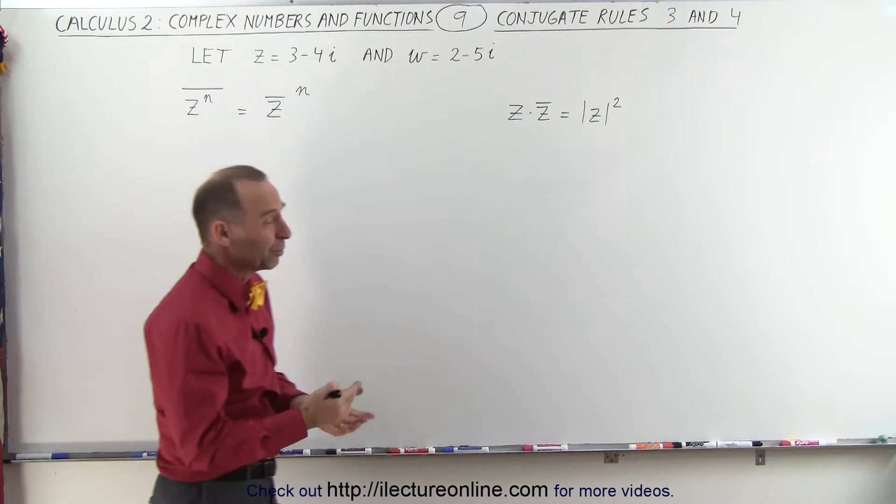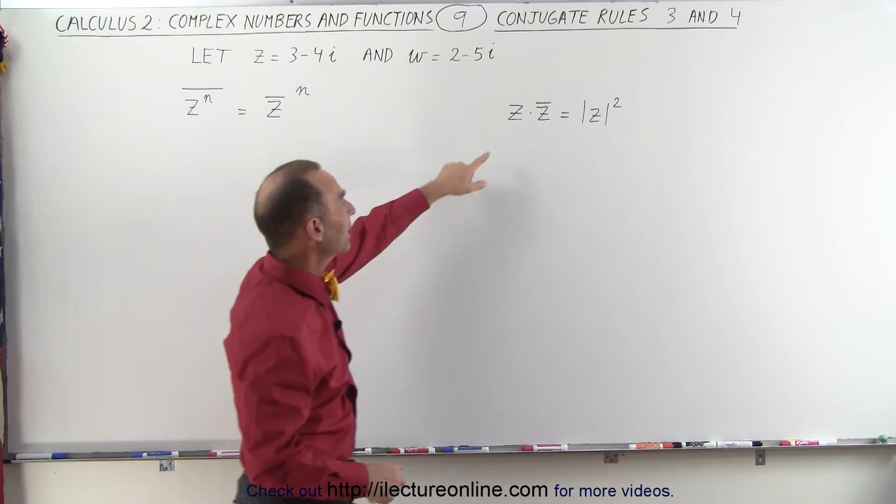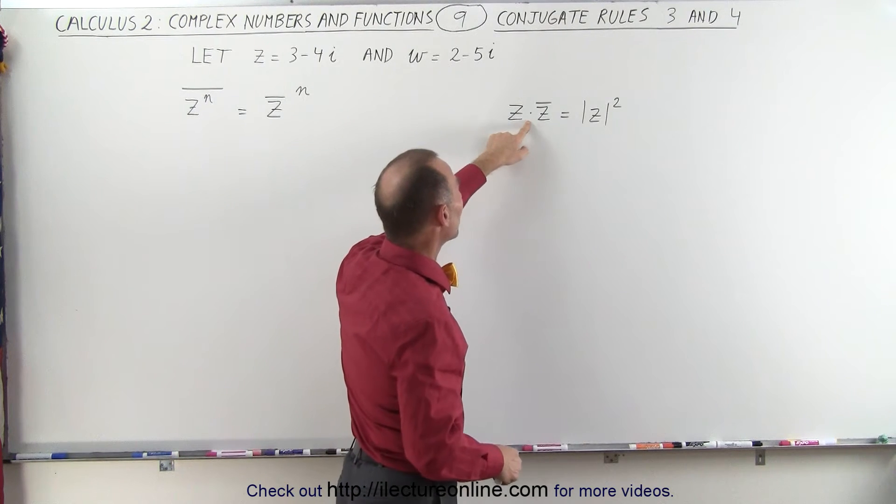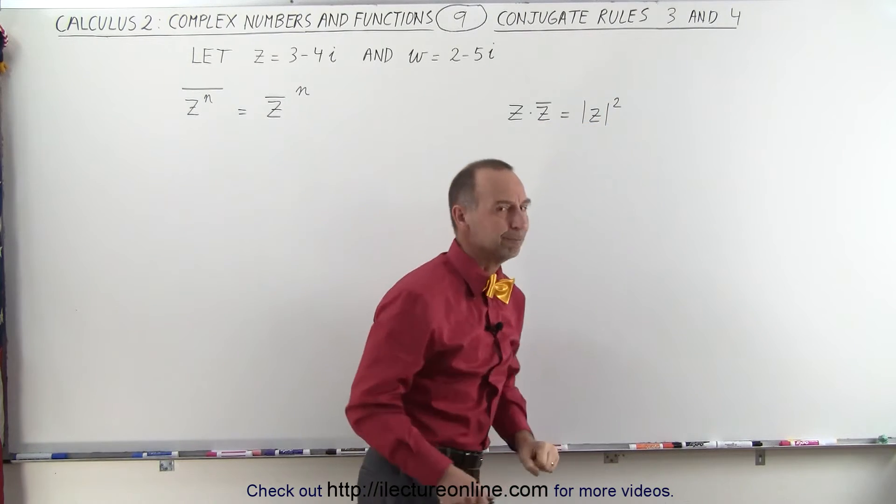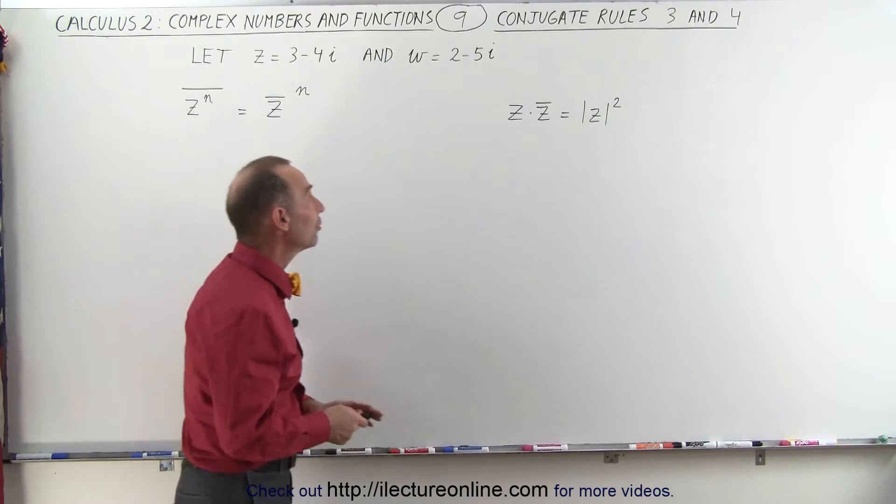And this rule we're already familiar with, that if we take a complex number and multiply it times its conjugate, we should get the modulus squared. So we'll illustrate that with a few examples.